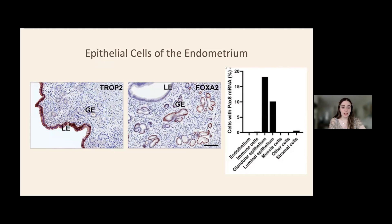These two images on the left demonstrate the result of some of the staining experiments I shadowed during the summer. Trope 2 was used to stain luminal epithelial cells, and FOXA2 was used to stain the glandular epithelial cells. The luminal cells line the outside of the tissue, whereas the glandular cells are suspended. The figure on the right demonstrates the presence of PaxA exclusively in the luminal and glandular epithelium. PaxA is important because it is a unifying protein driving metastasis in ovarian tumors in mice that could be developed to treat ovarian cancer in the epithelium.